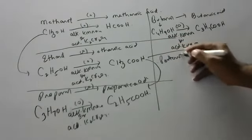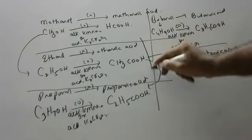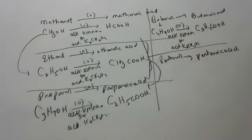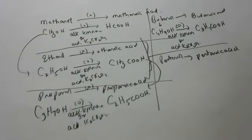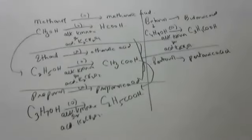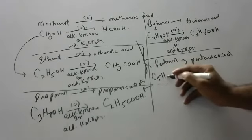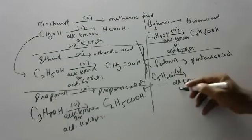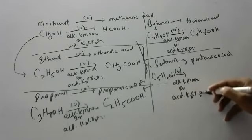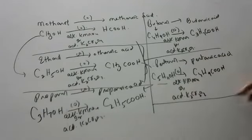Pentanol gives pentanoic acid. How much you practice, that much stronger you become. In the textbook they will give only this one, but you practice — not just for exam, prepare for knowledge. You should gain the knowledge. So C5H11OH on oxidation in the presence of alkaline KMnO4 and acidified potassium dichromate gives pentanoic acid, which is C4H9COOH.